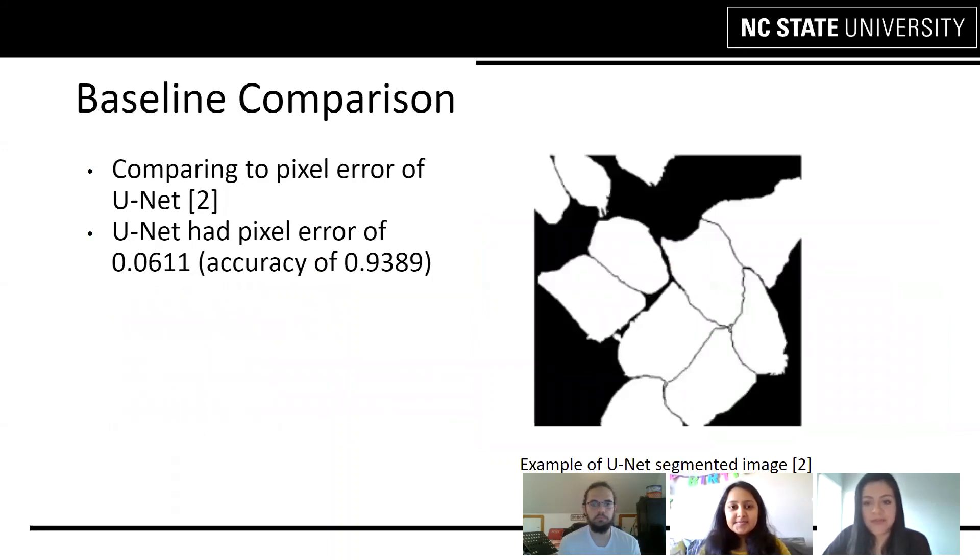We're comparing to pixel errors of U-Net in reference to those using biomedical applications. The U-Net had pixel error of 0.0611 and accuracy of 0.9389. The image on the right side has an example of the U-Net used in reference tools.